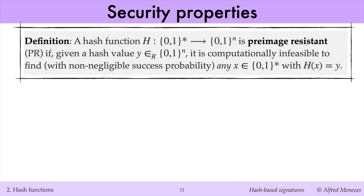Preimage resistance is the following property. Given the hash value Y, chosen uniformly at random from the function's codomain, it should be computationally infeasible to find, with non-negligible success probability, any message X whose hash equals Y. I'll call X a preimage of Y. Typically there can be many X's which map to a given Y, and H is preimage resistant if finding any one of these X's is computationally infeasible.